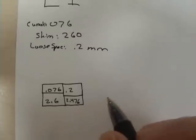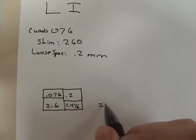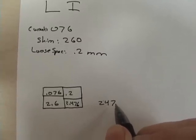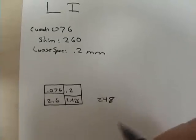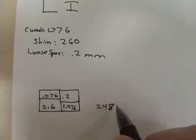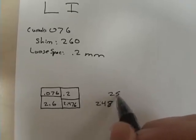And again, because they don't make a .247 shim, .248 actually, I guess would be better. I got to round up again to .250 shim.